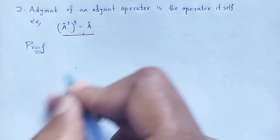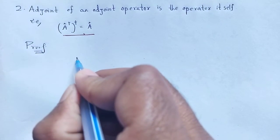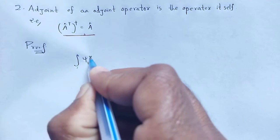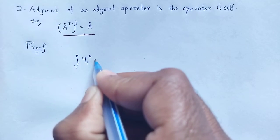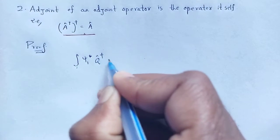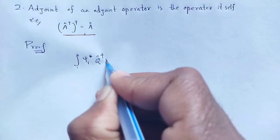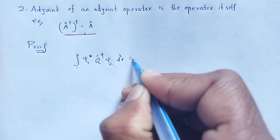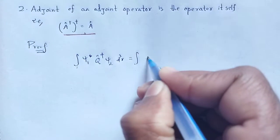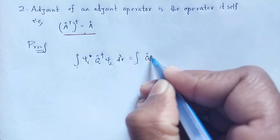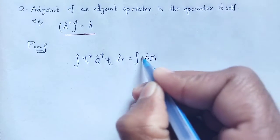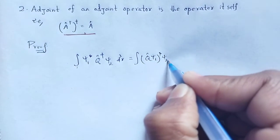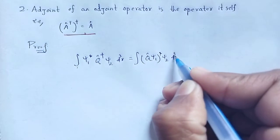We know from the definition of adjoint of an operator: integration over psi-1-star Q-cap-dagger psi-2 dτ is equal to integration over Q-cap psi-1-star psi-2 dτ.